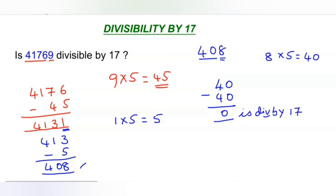So we can conclude that 41,769 is also divisible by 17.